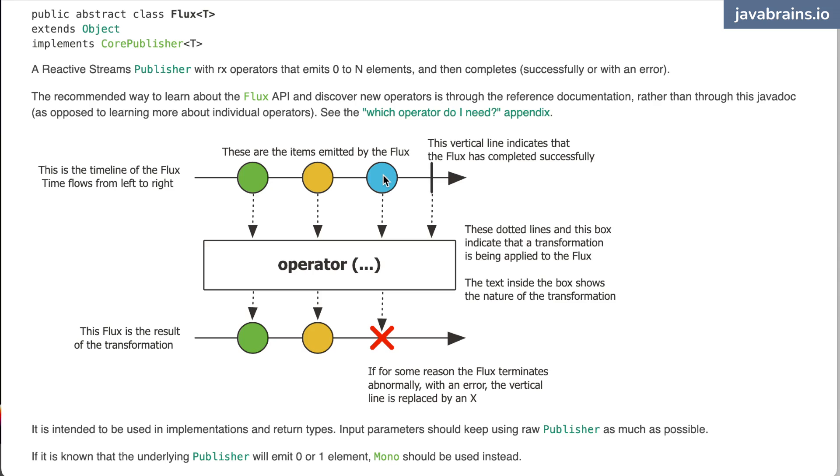What an operator does is it takes this item. It basically creates a new Flux. Okay. Every time you do an operator, you get a new Flux out of it. And every time it either takes the item as is or it does something with it. So basically the new Flux is going to have sometimes a corresponding item from over here. It could have entirely new items of its own. It really depends on what the operator does. Okay.